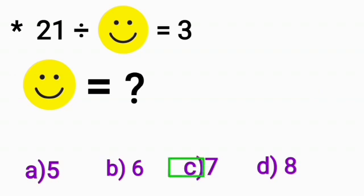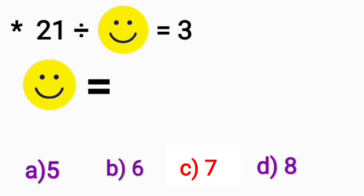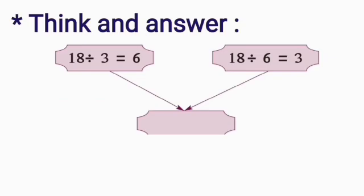Now, option C. 21 divided by 7. That is the required answer. The right answer is option C. That is 7.